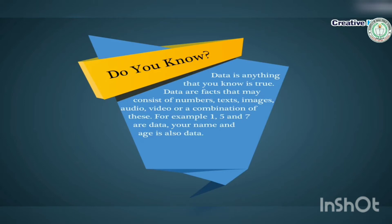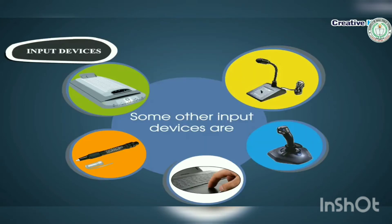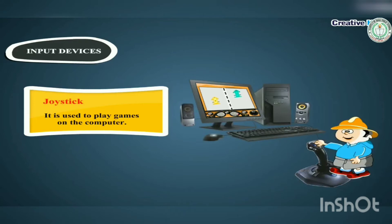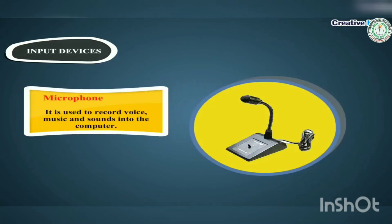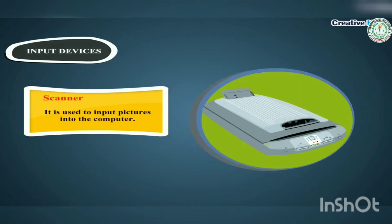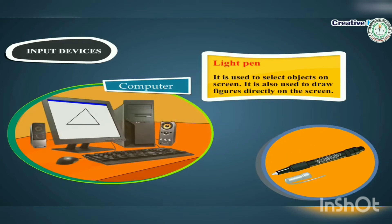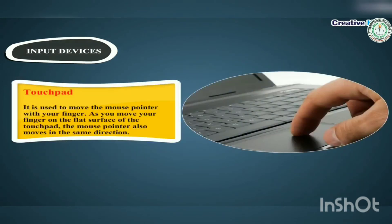Your name and age is also data. Some other input devices are joystick, scanner, microphone, touchpad, and light pen. Joystick is used to play games on the computer. Microphone is used to record voice, music, and sounds into the computer. Scanner is used to input pictures into the computer. Light pen is used to select objects on screen and also to draw figures directly on the screen. Touchpad is used to move the mouse pointer with your finger — as you move your finger on the flat surface, the mouse pointer moves in the same direction.